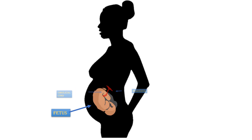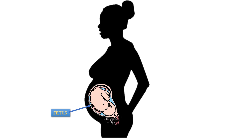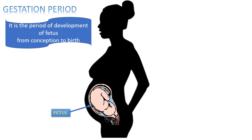Approximately 280 days or nine months are required for the complete development of the fetus. This is called the gestation period. The gestation period is the period of development of the fetus from conception — that is, the fusion of sperm and ovum — to birth.